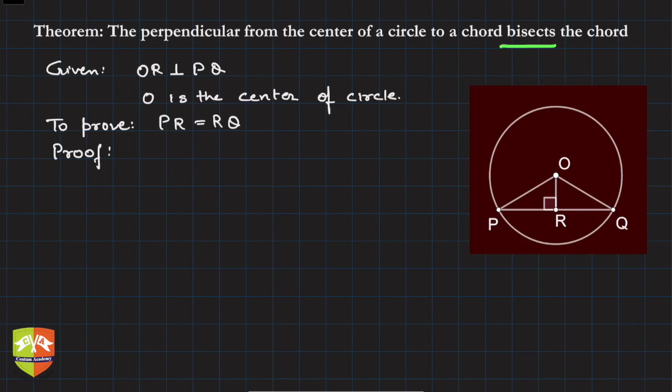Whenever there are two geometrical elements to be proven equal, we have one methodology. If we somehow prove that they are corresponding parts of two congruent triangles, then we are done. It looks like they are part of two congruent triangles, so let's see.